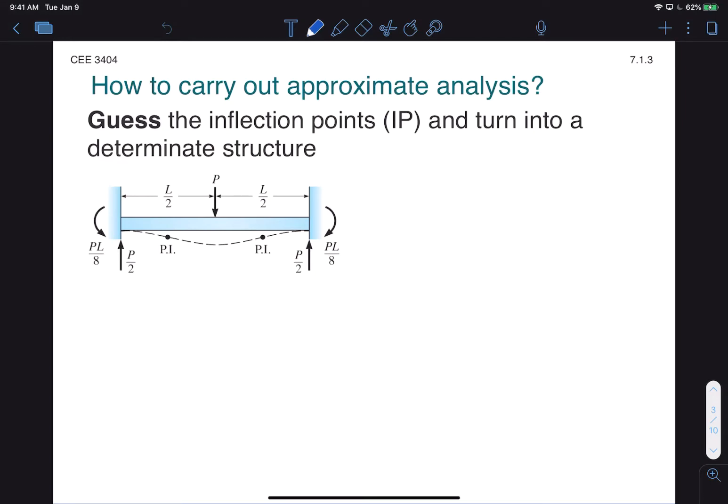As the name suggests, approximate analysis entails guessing or approximating something about the behavior in the structure. Generally, what we're trying to do is make an indeterminate structure look determinate by making a set of assumptions. What we'll be focusing on is actually guessing inflection points in the structure and turning those inflection points into hinges.